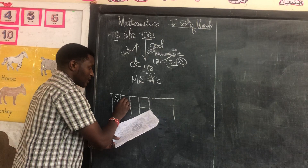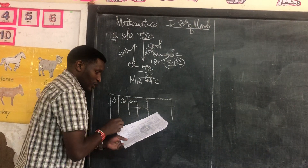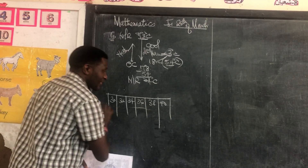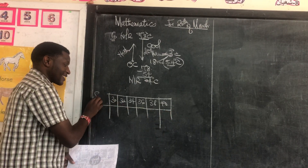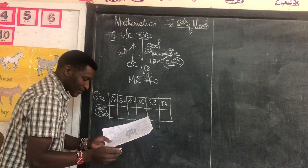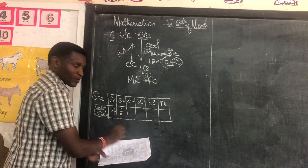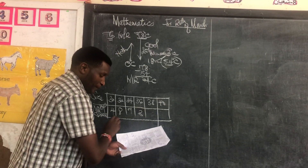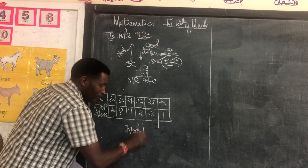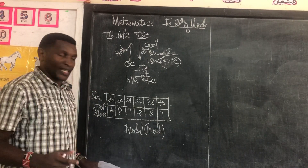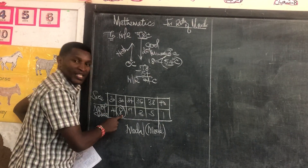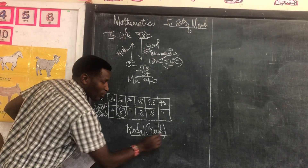We had 30, 32, 34, then we have 38 and 40. Remember, these numbers — 30, 32 — this is the size of the shoe. And here we have the number of shoes, or simply the pairs sold. Four pairs were sold, eight pairs were sold, seven pairs were sold, three pairs were sold, five pairs were sold, and one pair was sold. The question is asking which is the mode. Mode means most repeated. Most repeated must be eight, because this is the highest number of shoes sold. So the mode here is eight.